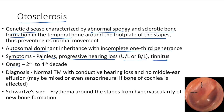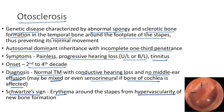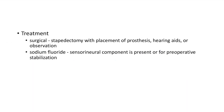Onset of otosclerosis is between the second to fourth decade. Diagnosis: normal tympanic membrane with conductive hearing loss and no middle ear effusion; there may be mixed or even sensorineural hearing loss if the cochlear bone is affected. Schwartz sign — erythema around the stapes from hypervascularity of new bone formation — is a classical sign of otosclerosis.